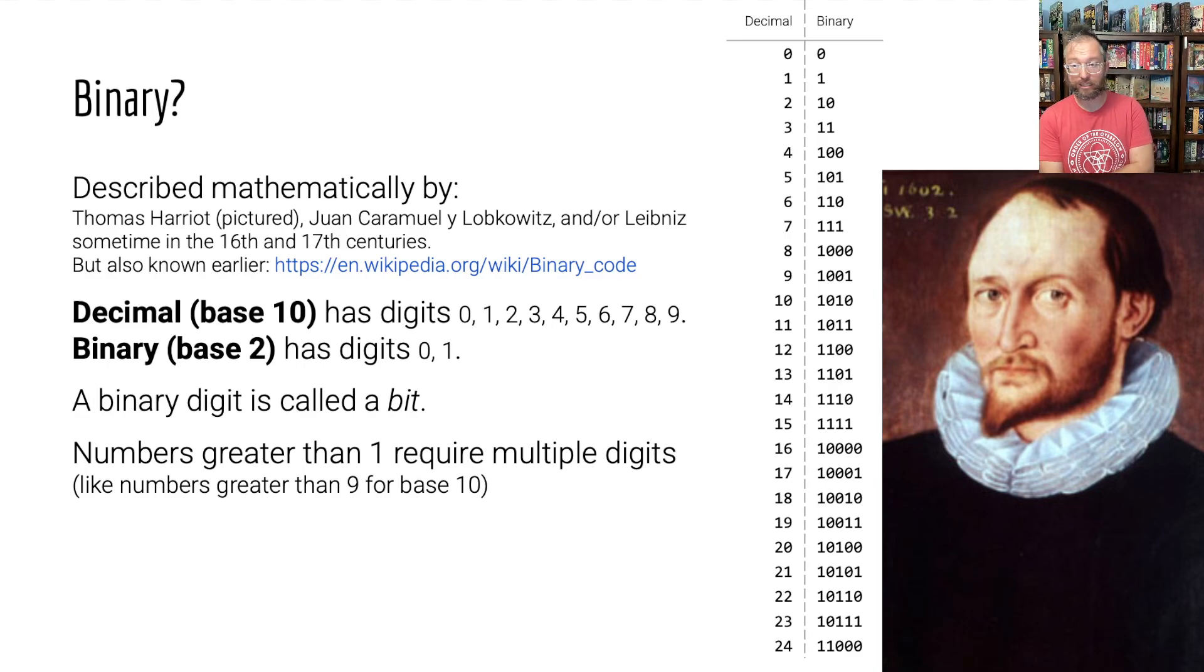Binary is a numerical base system with a base of two. Binary has two numbers. Decimal has ten numbers, ten digits from zero to nine. Binary, you have zero and one. And if you want to express a bigger number than one, you have to add an additional place, an additional digit place.